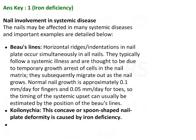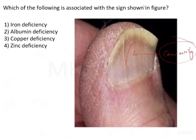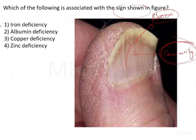Going back to the question: which of the following is associated with the sign shown? The sign is showing concavity and the nails are spoon-shaped, meaning koilonychia is present. This is generally seen in iron deficiency, as already discussed.